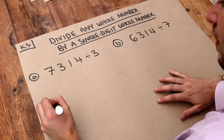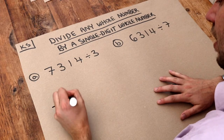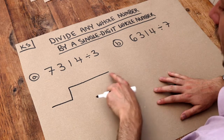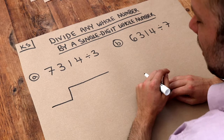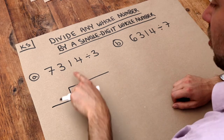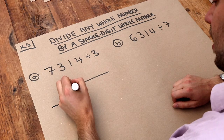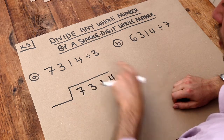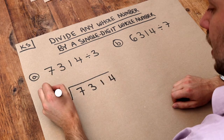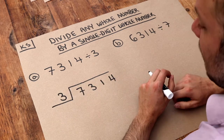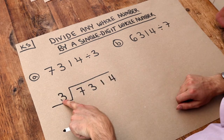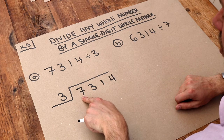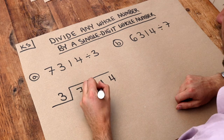The way we do it is using something called the bus stop method. The reason it's called the bus stop method is because when you use the lines for your working, it looks a bit like a bus stop. We put the divisor on the left and the number we're dividing on the right, under the bar. Then we see how many times that three goes into each of these digits, starting from the leftmost digit and gradually working to the right.